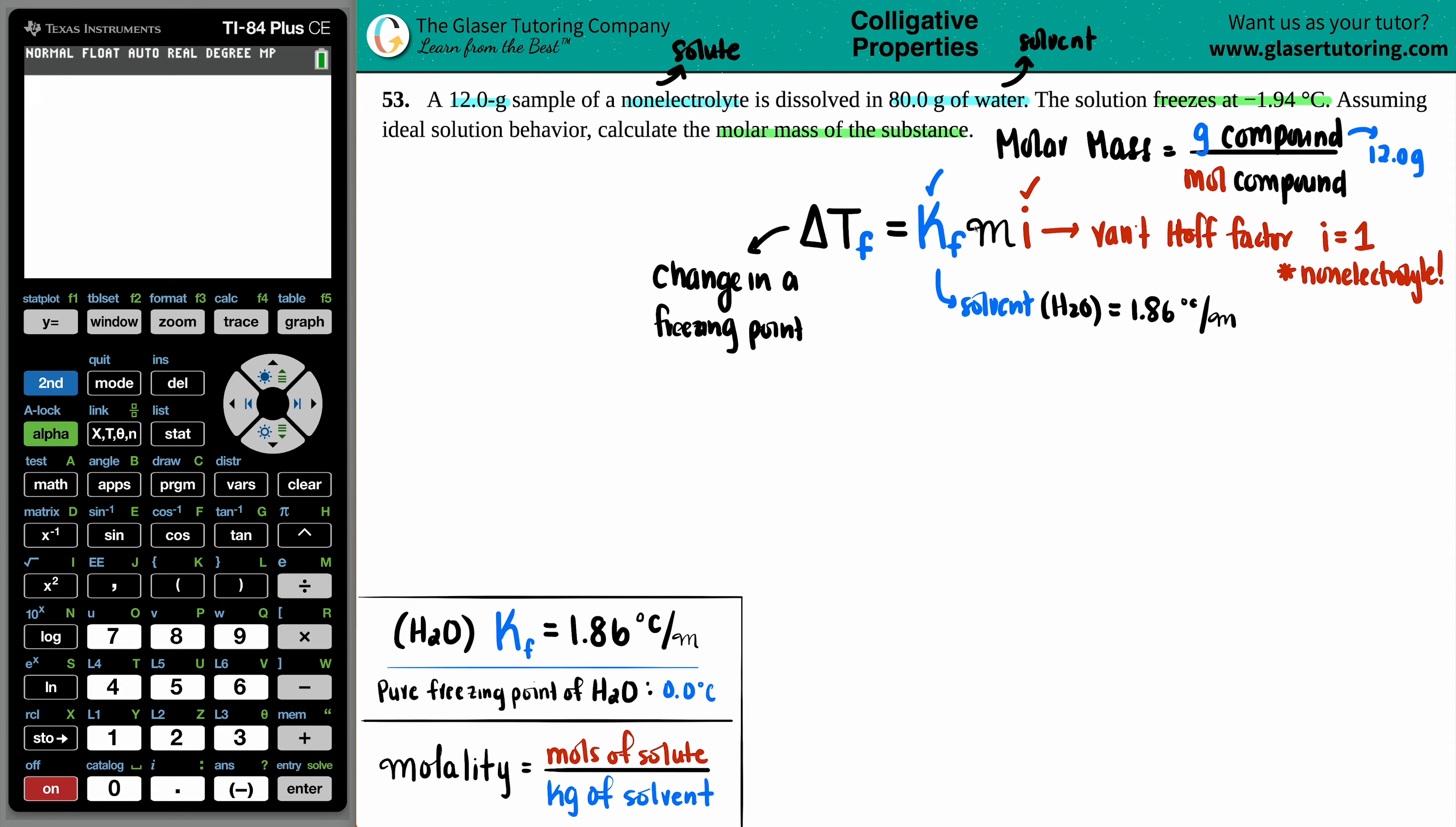What are we going to solve for? Well, let's see. Change in the freezing point. Now, they did state that this new solution froze at negative 1.94 degrees Celsius. But the thing is, if you're going to find a change, you have to know what that pure solvent would have froze at without the solution or without the added solute. So that's where we have to know that the pure freezing point of the water, the solvent, is 0 degrees Celsius.